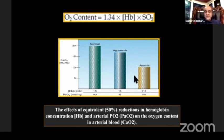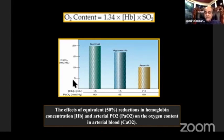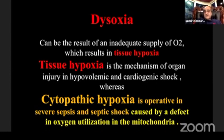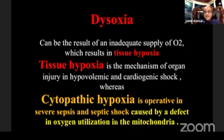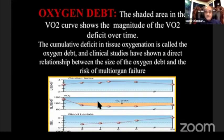We must concentrate on how much oxygen delivery there is and how much hemoglobin is in the patient. We must be oriented about the type of hypoxia — whether it is stagnant hypoxia as in cardiovascular shock and hypovolemic shock, or whether the problem is in the mitochondria as in sepsis, severe sepsis, or septic shock.